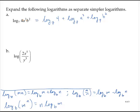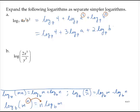Now looking at that last rule — log base b of m to the nth can be written as n times the log base b of m — I have an a to the third and a b to the second. So I can write this as the log base 7 of 4 plus 3 times the log base 7 of a plus 2 times the log base 7 of b.